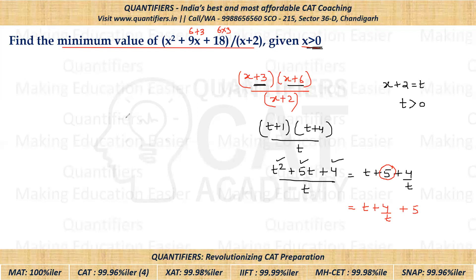Now students, to minimize T + 4/T, and we also know that T is anyway positive, there are a couple of methods to minimize this expression. See, one way of doing it is you can apply arithmetic mean greater than equal to geometric mean.